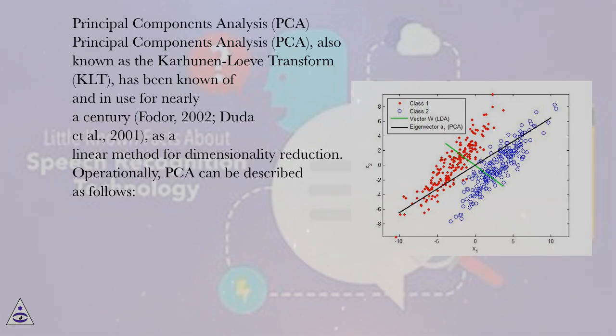Principal Components Analysis (PCA), also known as the Karhunen-Loève Transform (KLT), has been known of and in use for nearly a century (Fodor, 2002; Duda et al., 2001) as a linear method for dimensionality reduction.